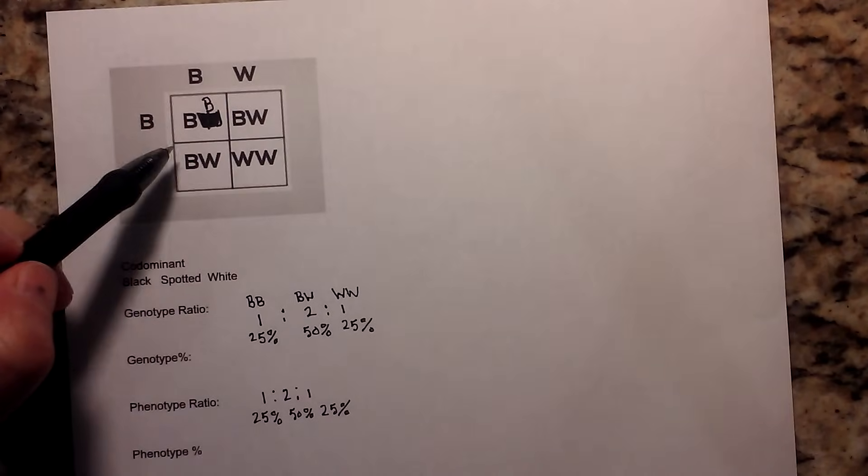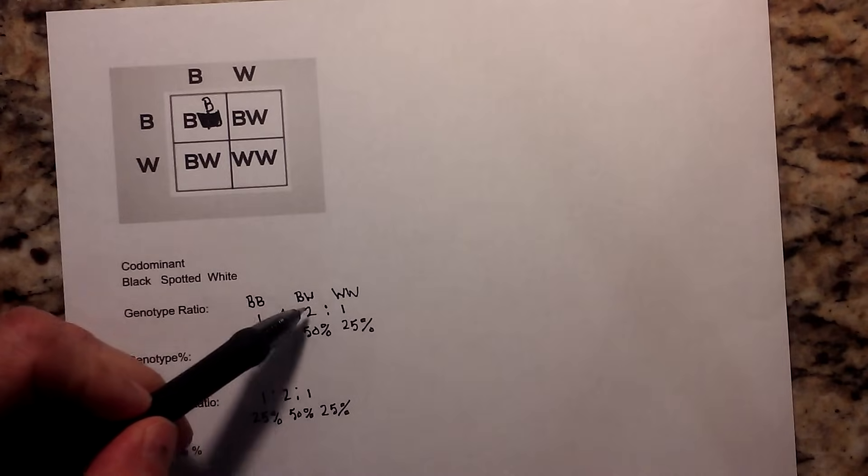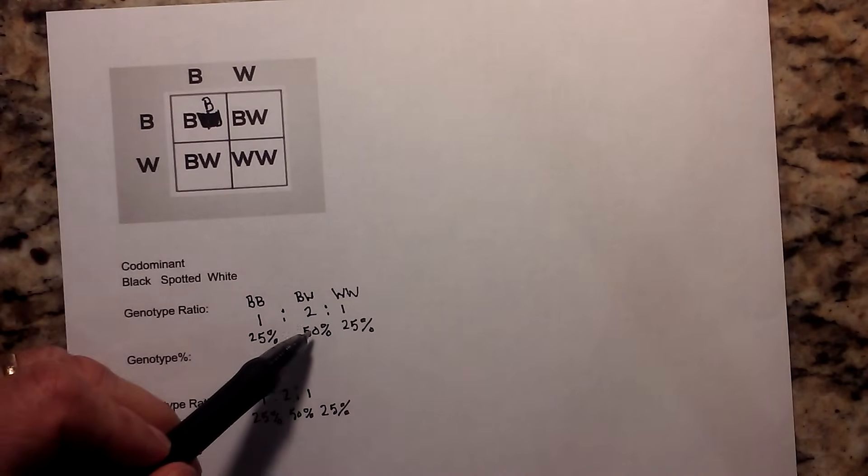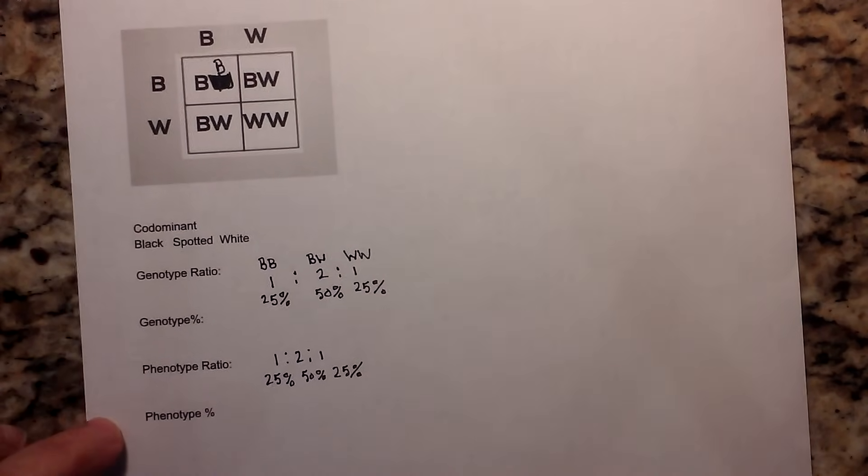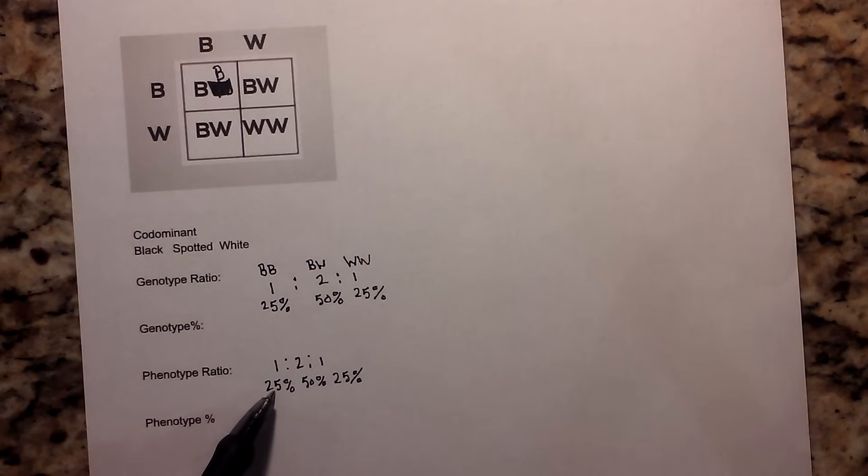And so, that would be 1 BB, 2 BW, and 1 WW. Or that would be 25%, 50%, or 25%. And the phenotype ratio, kind of the same thing. This will be black. This will be spotted. And this will be white. So, it's a 1 to 2 to 1.